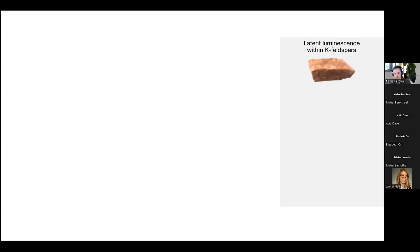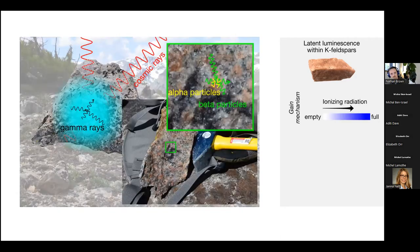So how do we describe the luminescence accumulation and decay within a grain of K feldspar? Through time, this luminescence signal will build up due to exposure to ionizing radiation.